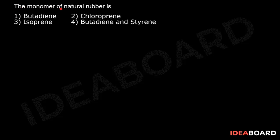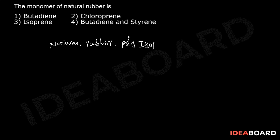The monomer of natural rubber — natural rubber means polyisoprene. Polyisoprene is called as natural rubber.